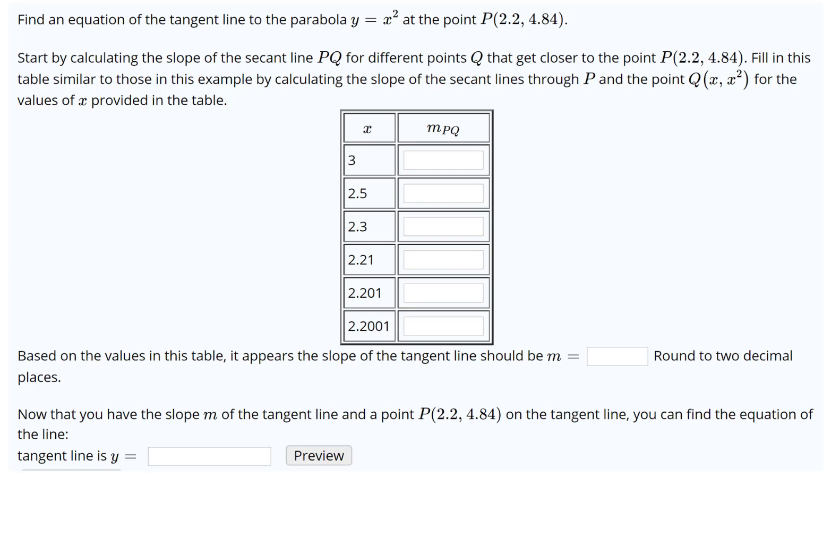We're supposed to first start with x equal 3. That would give me the point (3, 9), putting 3 in our function here. So what I need to do for this first one is compute a slope, and that's going to be the y from the second point minus the y from the first point divided by the x from the second point minus the x from the first point. Go ahead and compute that slope—looks like it's 5.2.